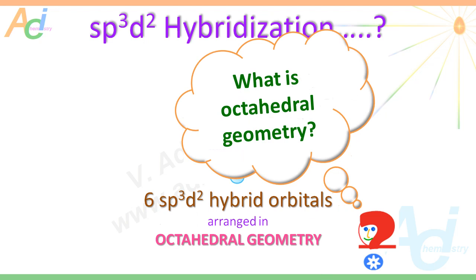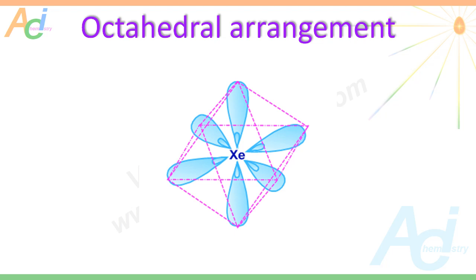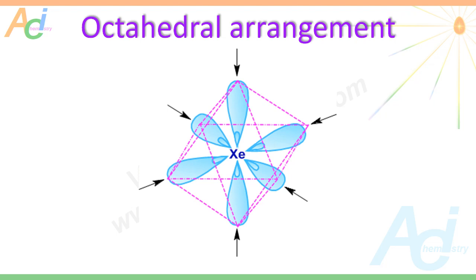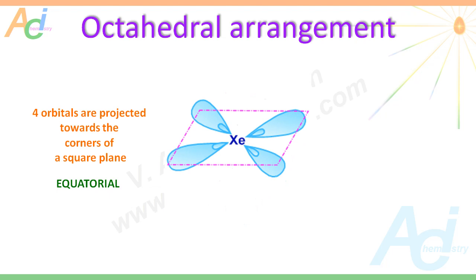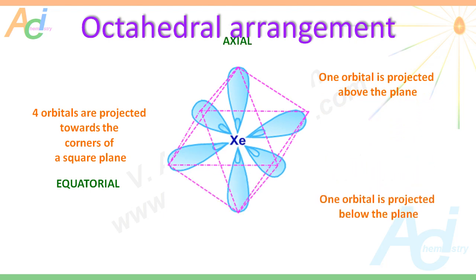So what is octahedral geometry? An octahedron is a deltahedron with eight triangular faces and six corners. The sp3d2 hybrid orbitals are projected towards these corners. Four orbitals are arranged in a square plane making 90-degree angles with each other — referred to as equatorial orbitals. The remaining two are arranged above and below the square plane, referred to as axial orbitals.